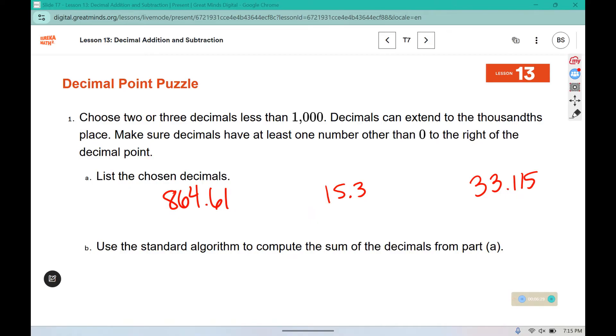Now it says use the standard algorithm to compute the sum of the decimals from part A. If you selected different decimals, you will have a different answer for part B. So I have to line up my decimals here. And I'm going to fill in with zeros, so that way I have all the way to the thousandths. That would be 5, 2, 9, 10. Don't forget to line up your decimal. 4 plus 1 is 5, plus 5 is 10, plus 3 is 13. 1 plus 6 is 7, 8, 9, 10, 11. 8 plus 1 is 9. So my final answer to the sum would be 913.025, or 25 thousandths.